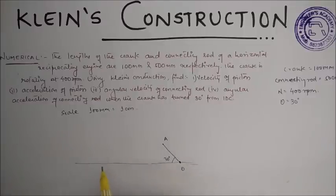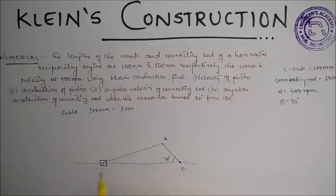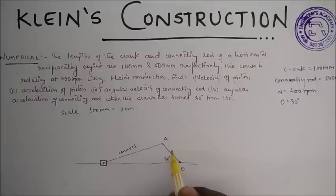this line with the help of rounder to 5 centimeter length. Okay, this will be connecting rod and here there will be our slider. This is connecting rod and this is crank, this is slider or piston. Now with the help of this configuration diagram we will draw the velocity diagram and acceleration diagram within